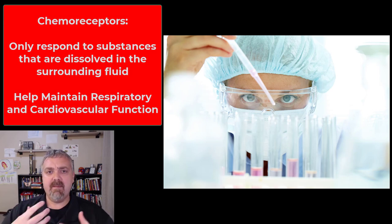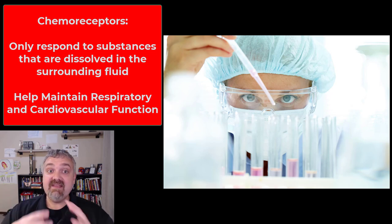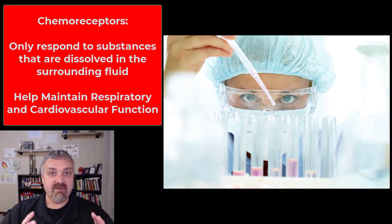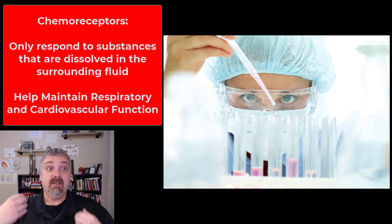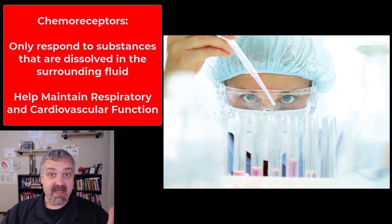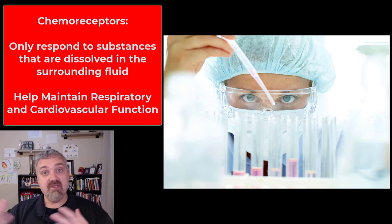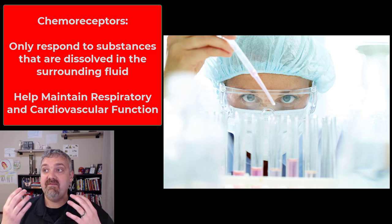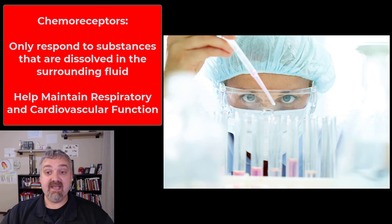Chemoreceptors monitor chemical composition. The key thing: they only respond when a lipid-soluble or water-soluble substance has been dissolved in the surrounding fluid — you can't smell or taste anything until it's been dissolved. For general senses, these chemoreceptors primarily monitor the chemical composition of your respiratory and cardiovascular systems. In the respiratory system, they monitor pH and carbon dioxide levels — if blood pH drops too low or CO2 gets too high, you die. Your brain constantly monitors CO2 and responds by changing how you breathe.